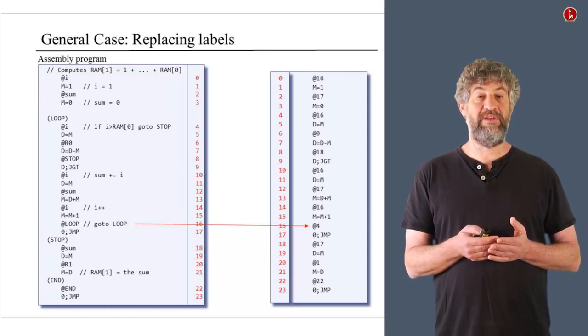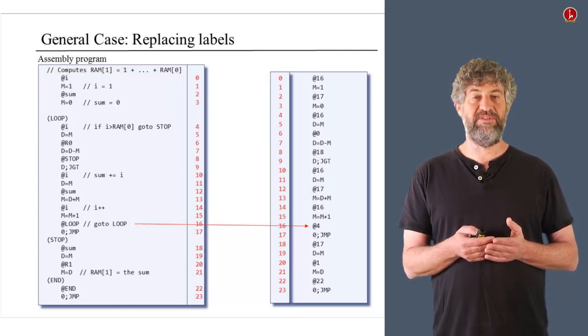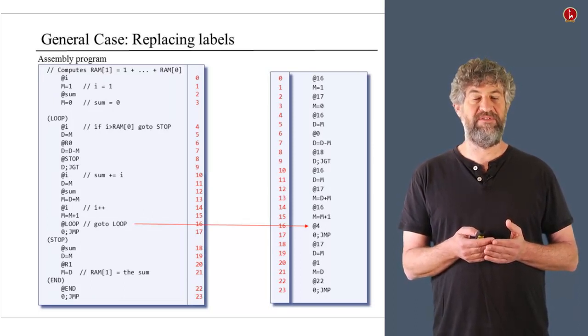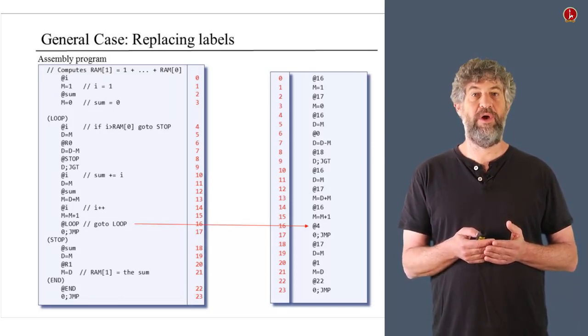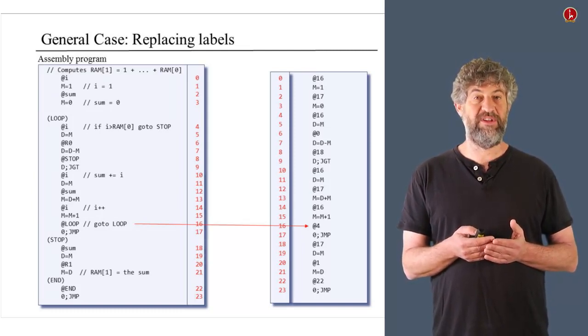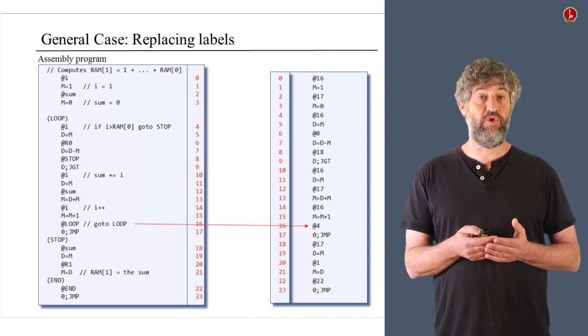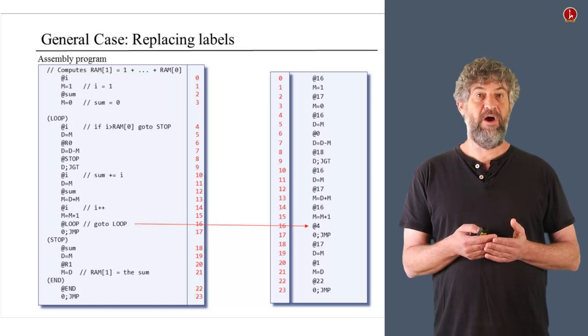Now notice that we have inserted line numbers just next to the programs. And the line numbers denote in which memory location each one of these commands will be put when you actually put it into memory. The logic of why, the logic of how this was done is already explained in 6.4.